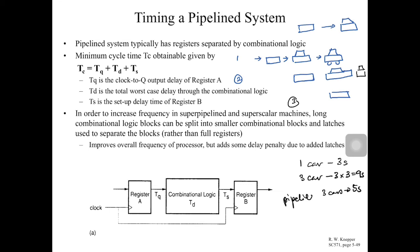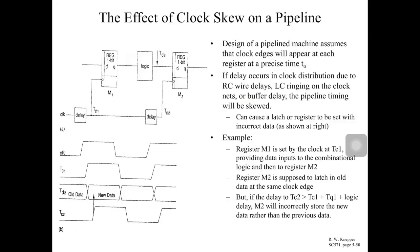In the same way, the pipeline system breaks combinational logic into several different chains or blocks, which allows us to increase the operating frequency. In a super-pipeline or super-scalar machine, long combinational logic blocks are split into smaller blocks that run in parallel. This can improve the overall frequency of the processor, but sometimes it adds a delay penalty.